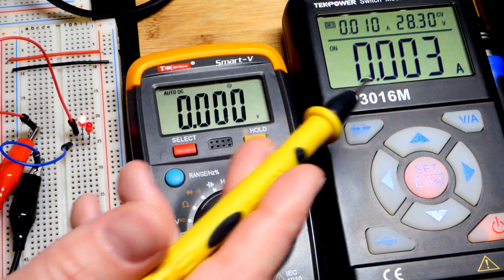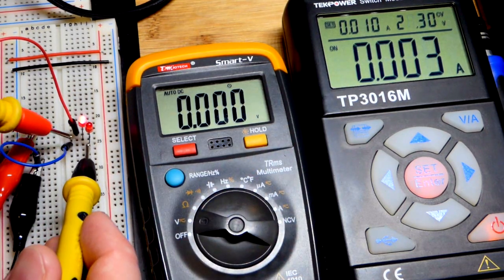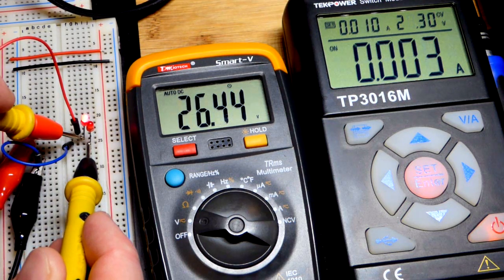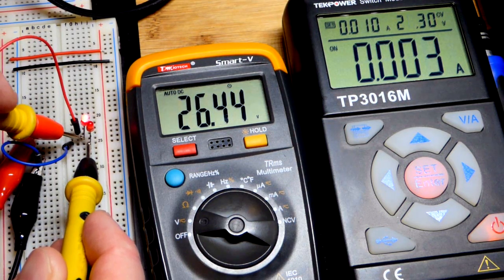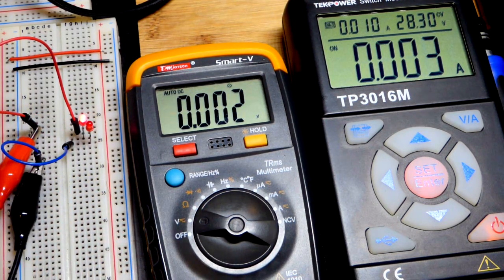And so 28.3 minus about 2 volts to make the math easy, we'll get about 26.3 on here in that range. So there we go, 26.3, a little bit more than 26.3 across that LED.